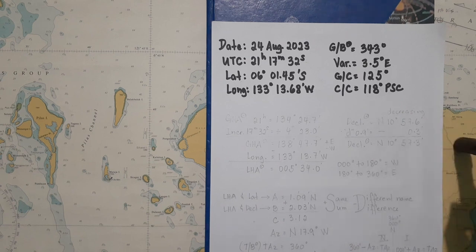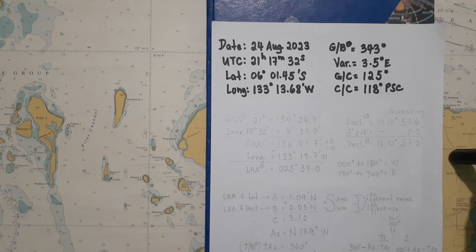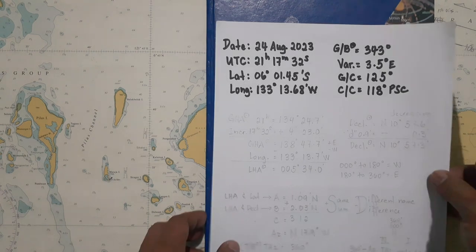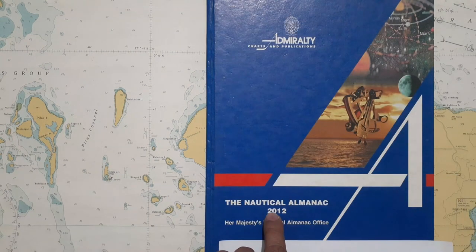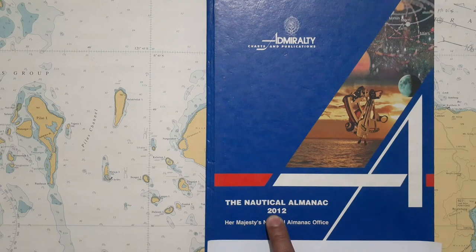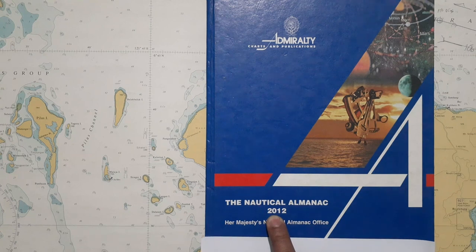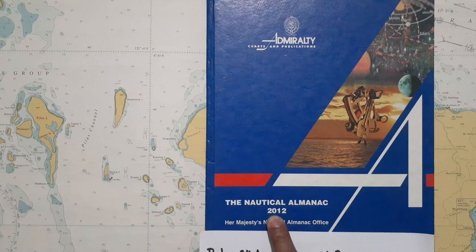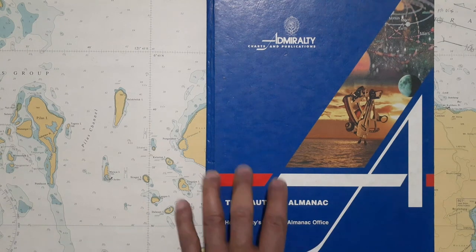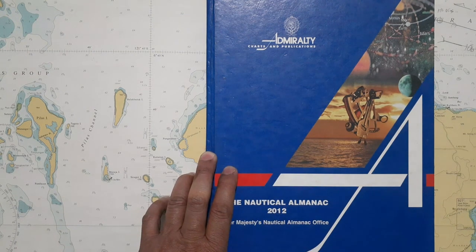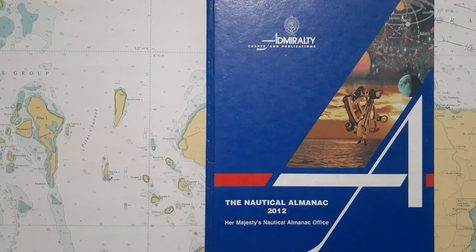For this particular video, I cannot demonstrate how to take the bearing of the sun since I was not on board. This video is purely calculations and extrapolation on how to determine the gyro error by ABC method. As you can see, this is a 2012 nautical almanac, but I have a soft copy of the present year 2023, so for the data of GHA and declination we will take data from 2023. I prefer to use this hard copy, so let's start.